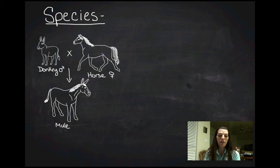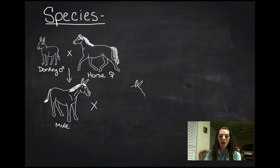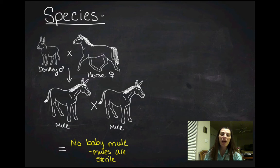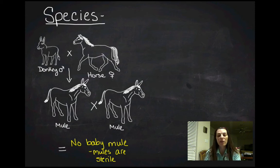Mules are fairly desirable work animals for farms. The problem is that when you take a mule and cross it with another mule, what you get is no baby mule, because mules are sterile. Mules are not considered their own species, and we consider a donkey and a horse separate species because when you take a mule and cross it with another mule, it doesn't make any baby mules.